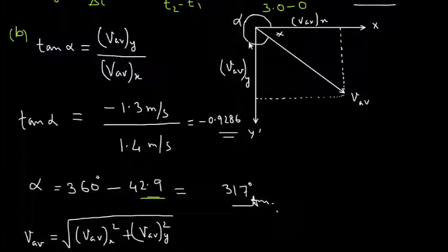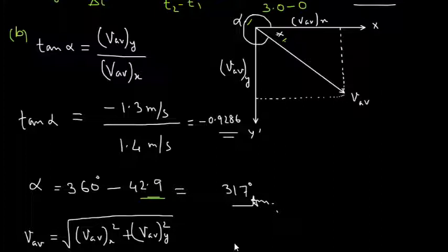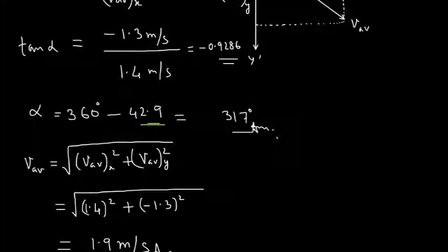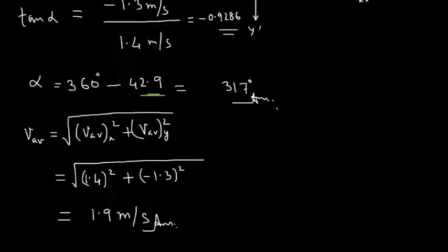However, alpha is the reference angle; the actual direction is 360 − 42.9 = 317 degrees approximately. The magnitude of average velocity is under root of (v_avg_x² + v_avg_y²). Putting the values and solving, we get 1.9 m/s.